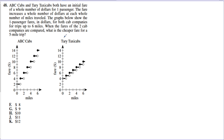Problem 48: We have two charts — one showing fare by miles for ABC Cabs and another for a different taxi company — both for one passenger, up to 6 miles. When comparing the two cab companies, what is the cheaper fare for a five-mile trip? Going to 5 on the mileage axis and reading up, we hit two points on each graph. An open circle means do not include that value; a filled-in circle means do include that value. This is a step function.